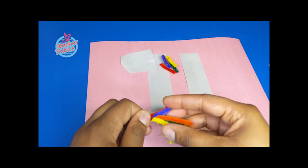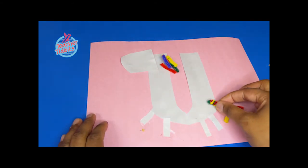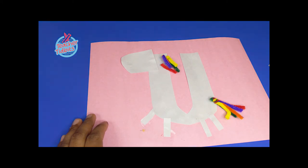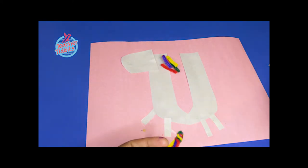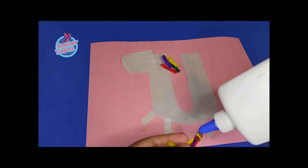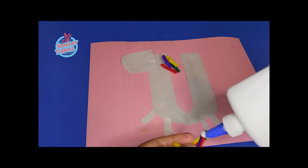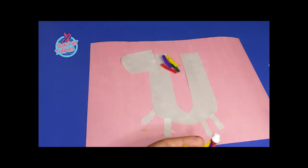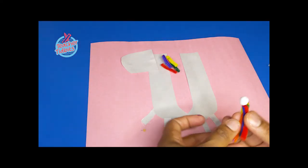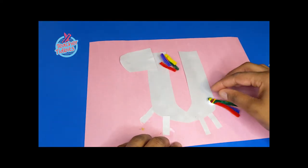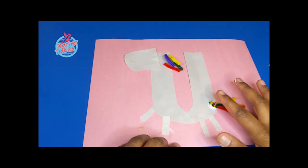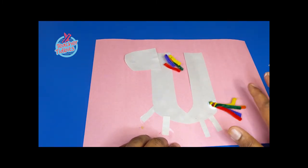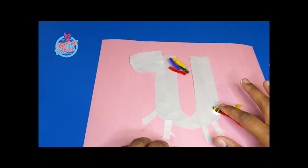So then it stays all together. And this is going to be my unicorn's tail. So let's go ahead and glue everything down. And what I love about this craft is there's no right or wrong way to do this, friends. Make this unicorn your own. Your unicorn does not have to look like Lady Long's. It doesn't have to look like mine. I want it to look like yours.